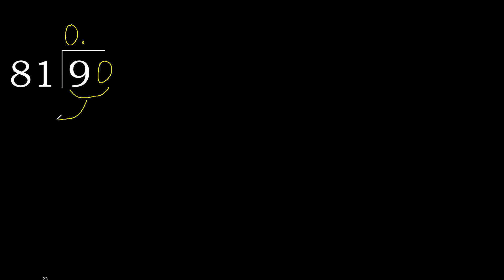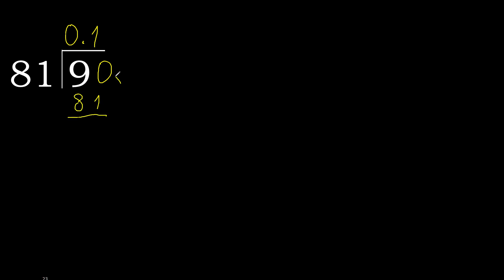90 is not less than 81, so we proceed with 90. 81 multiplied by which number is nearest to 90 but not greater? 81 multiplied by 2 is greater, but multiplied by 1 is 81, which is not greater. Subtract: the result is 9.